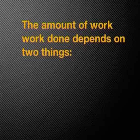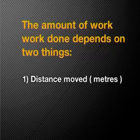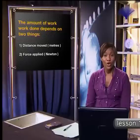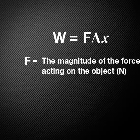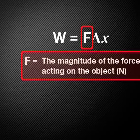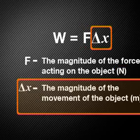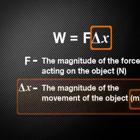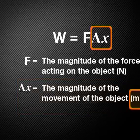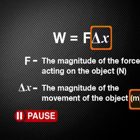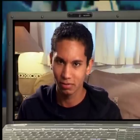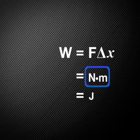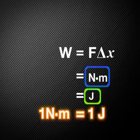That's right. The amount of work done depends on two things: the distance moved in metres and the force applied in Newtons. To calculate work, we use the formula: work equals force times displacement. In this equation, F is the magnitude of the force acting on the object measured in Newtons, and displacement is the magnitude of the movement of the object measured in metres. The unit for work would be Newton metres, but scientists refer to this combination of SI units as a joule. So one Newton metre is one joule — the unit for work is the joule.